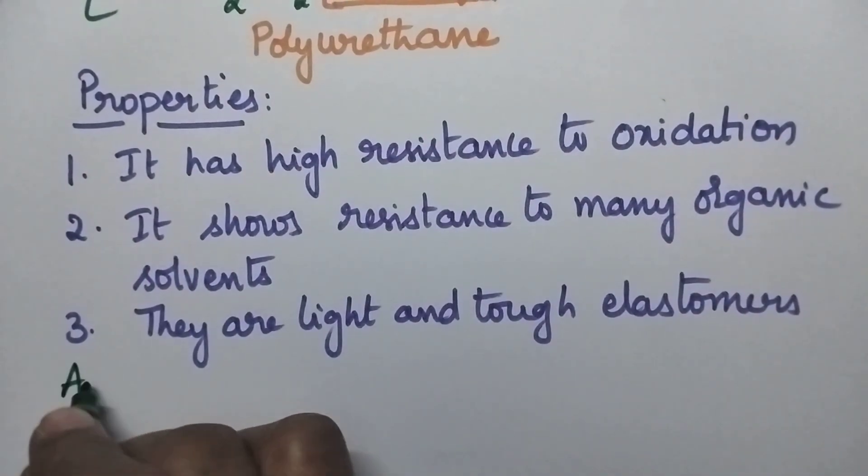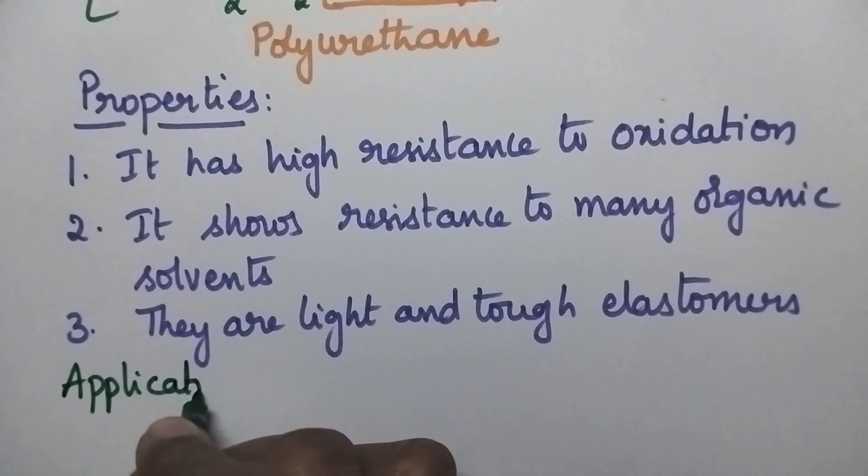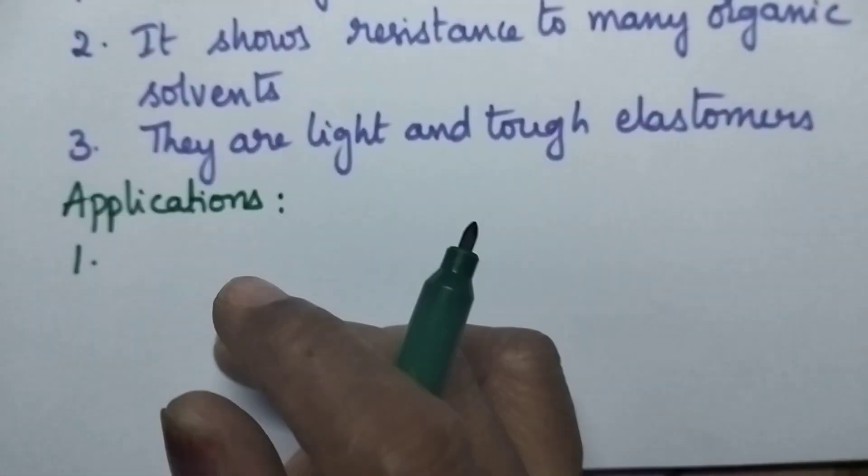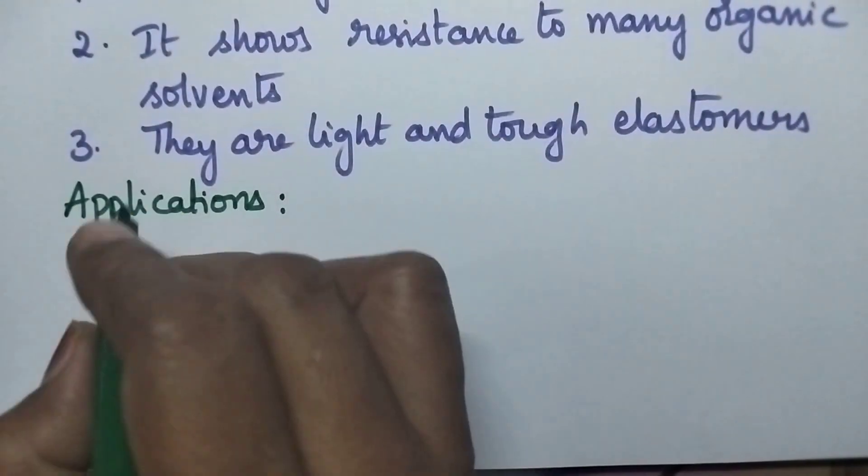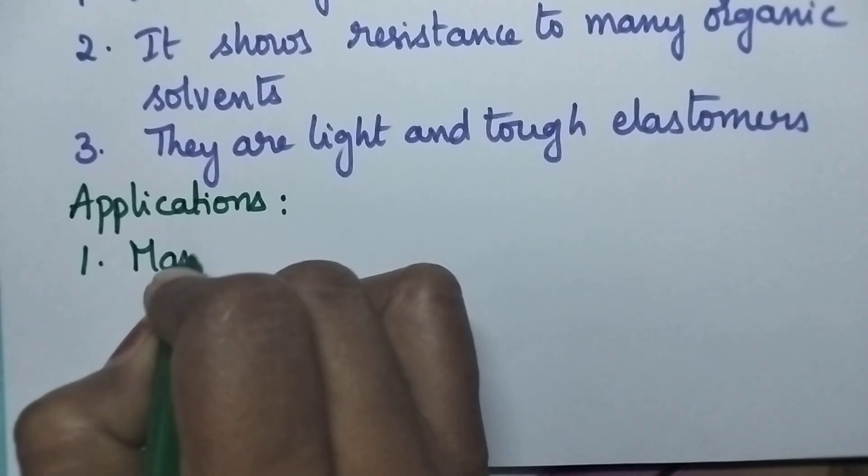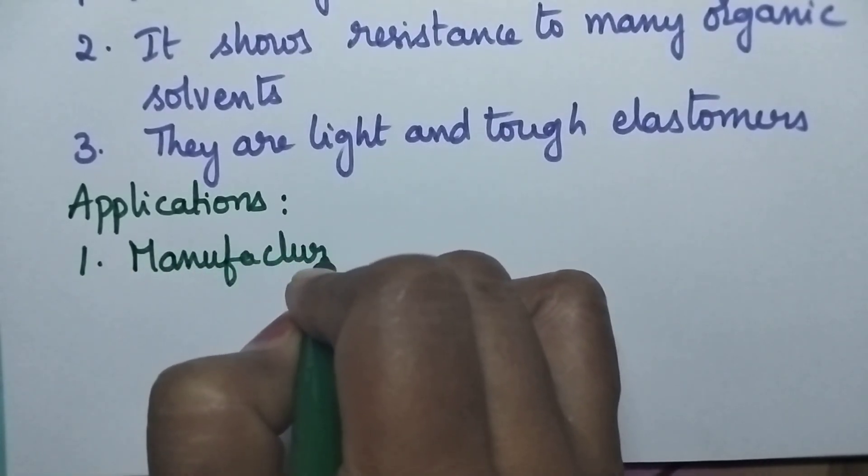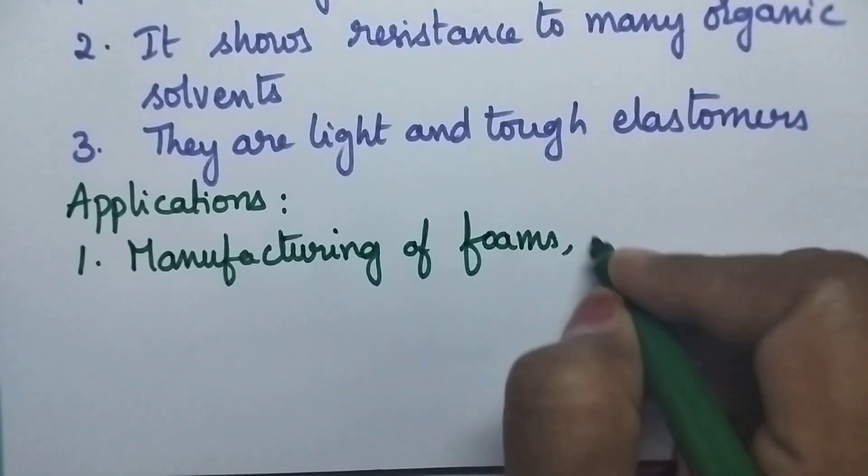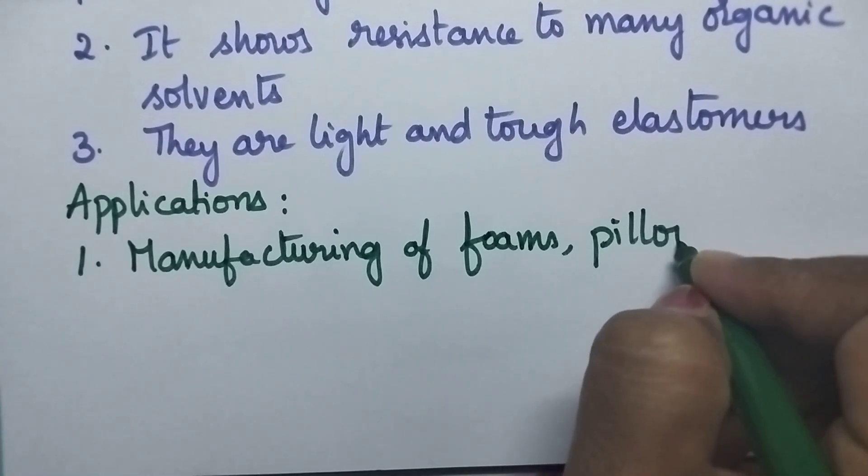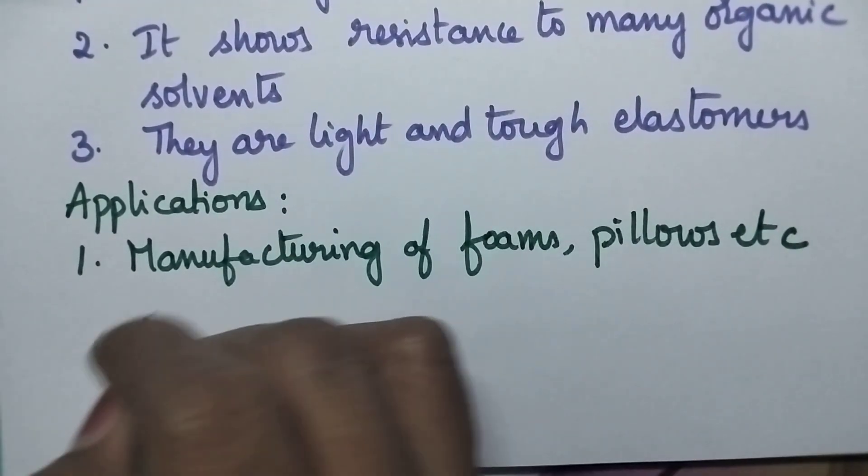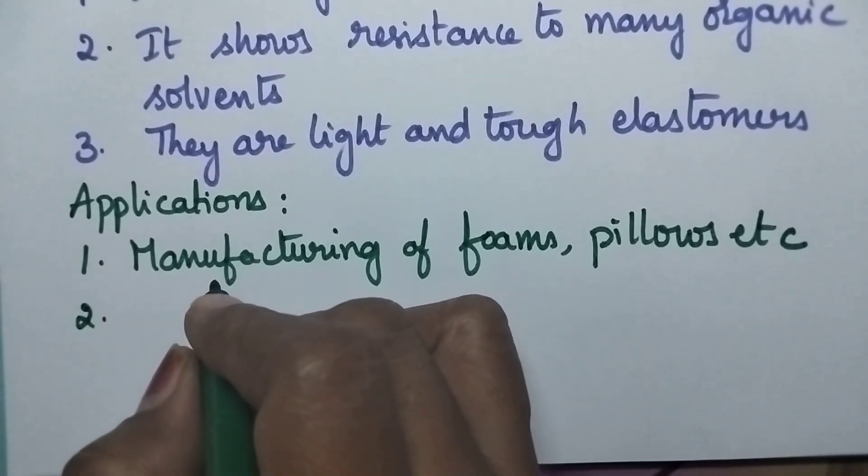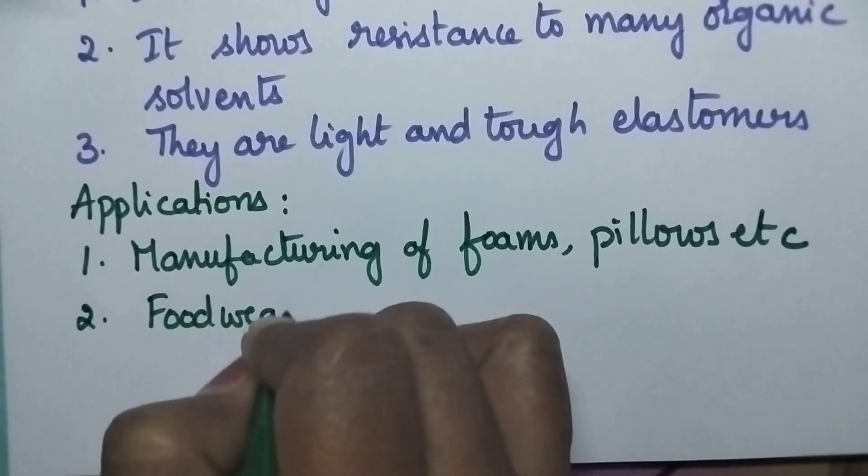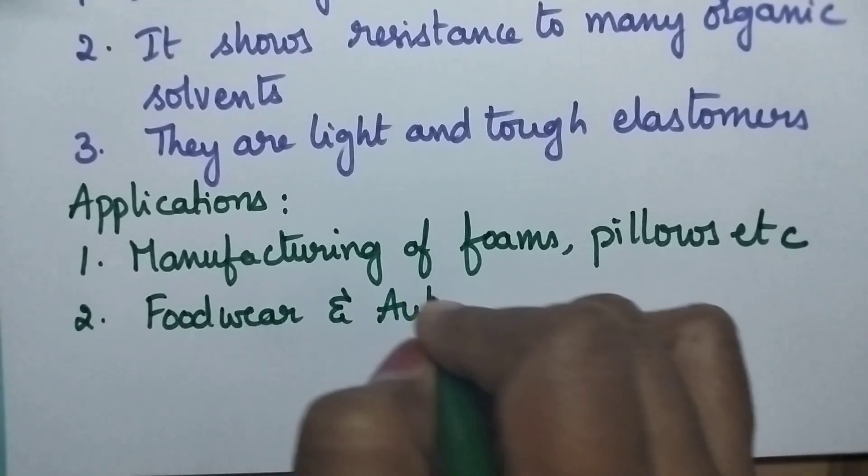So coming to the applications, polyurethanes are highly useful for the manufacturing of foams, pillows, mats, etc. And these polyurethanes are also used in footwear and automobile industry.